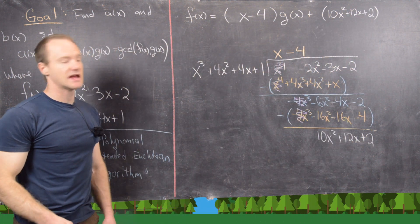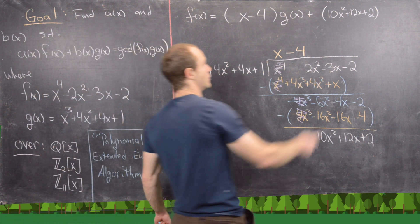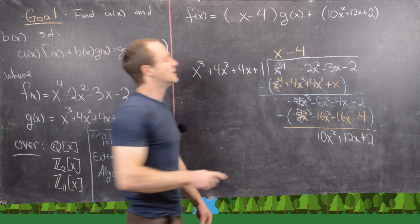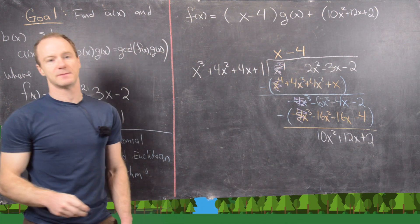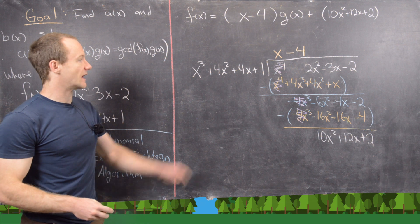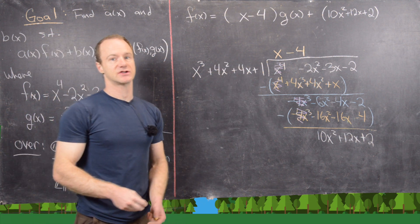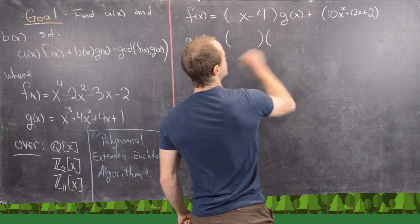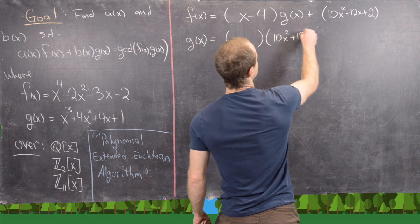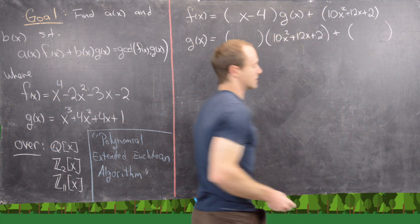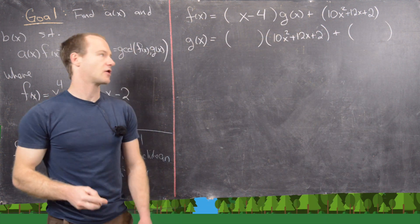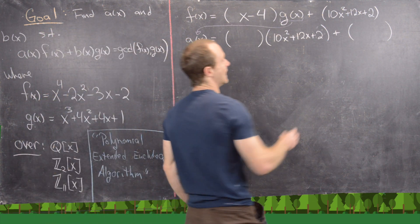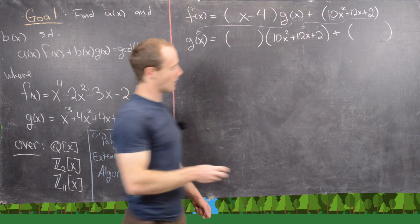Continuing the Euclidean algorithm, our next step is to divide our old divisor g(x) by the first remainder 10x² + 12x + 2. Just as with the integer Euclidean algorithm, the old divisor becomes the new dividend and the old remainder becomes the new divisor. So we want to write g(x) = something times (10x² + 12x + 2) plus a remainder.